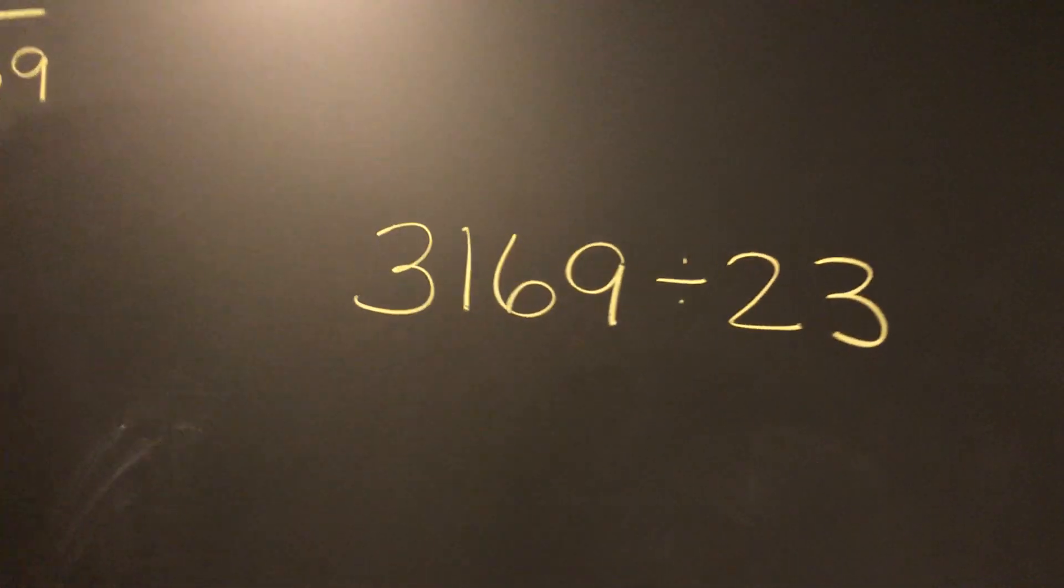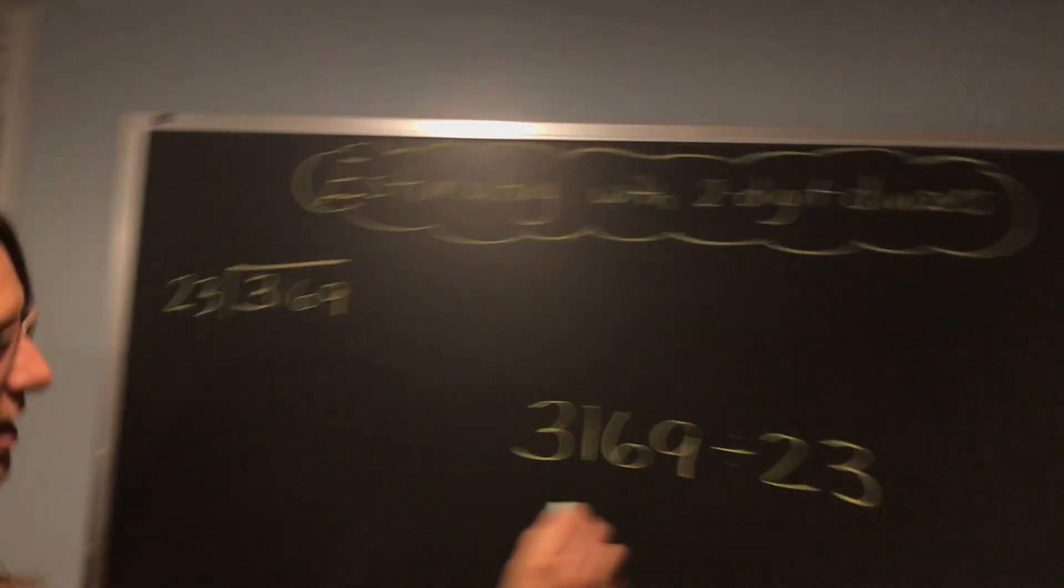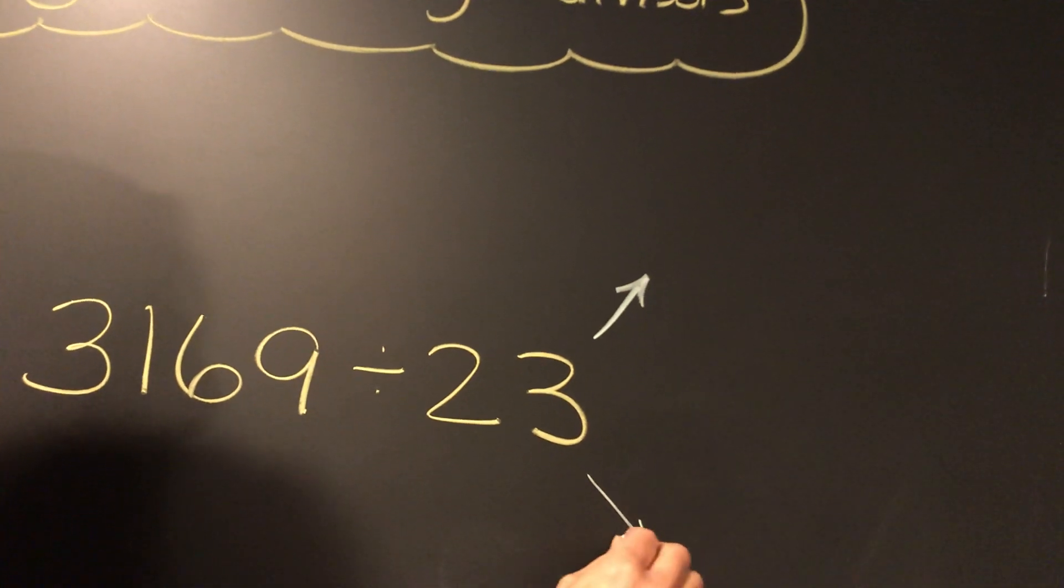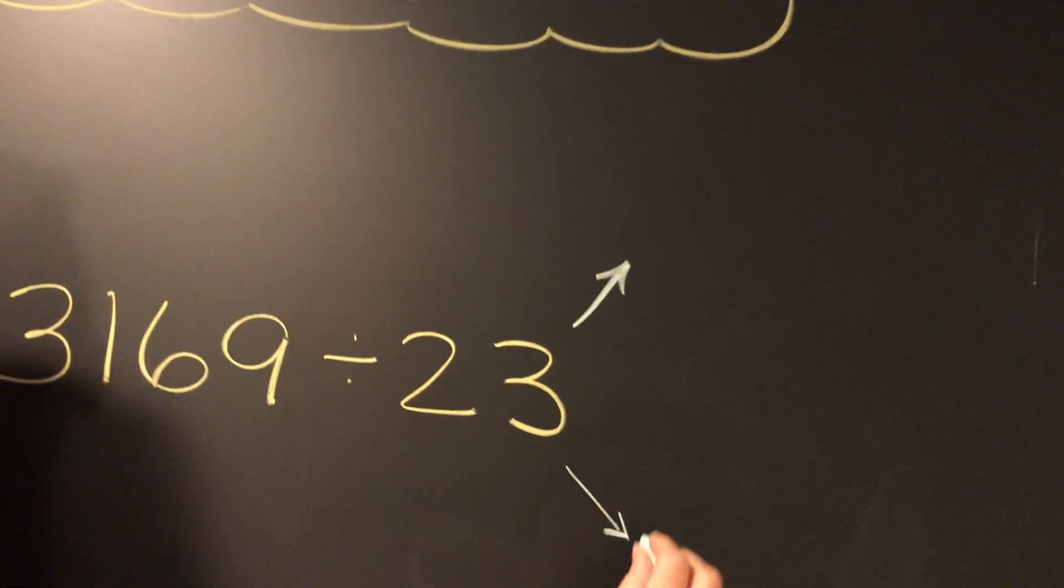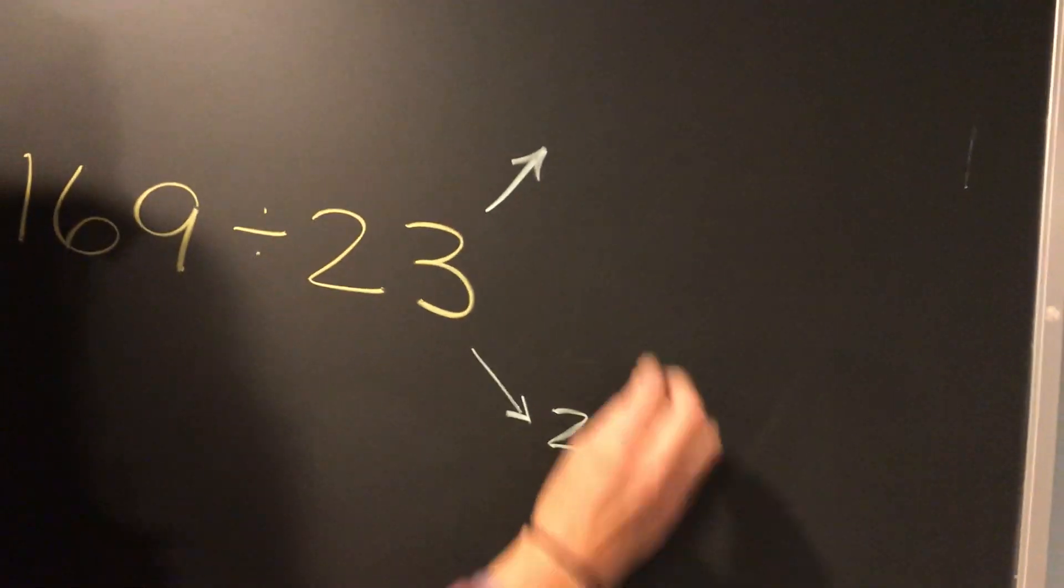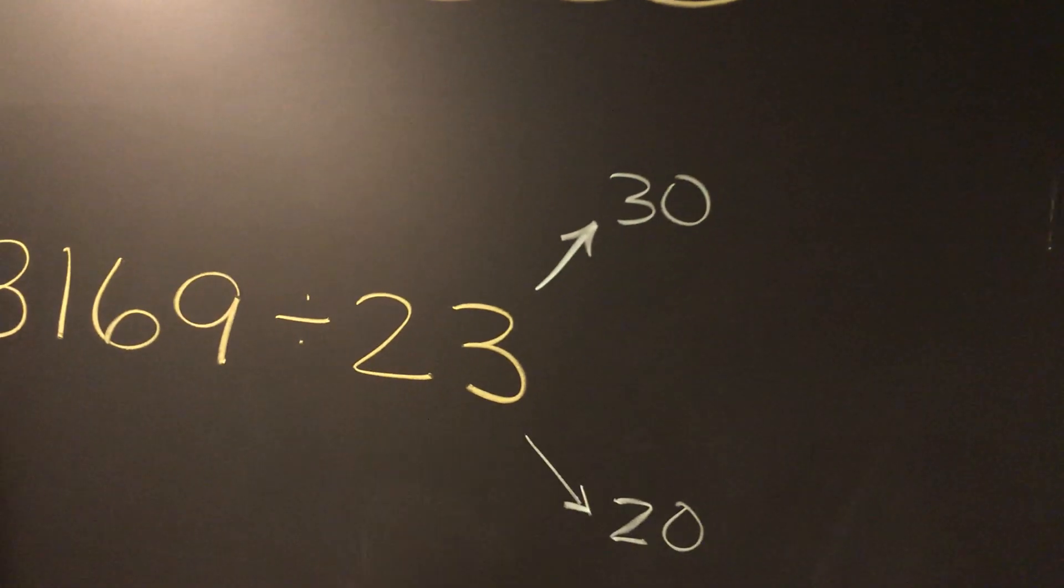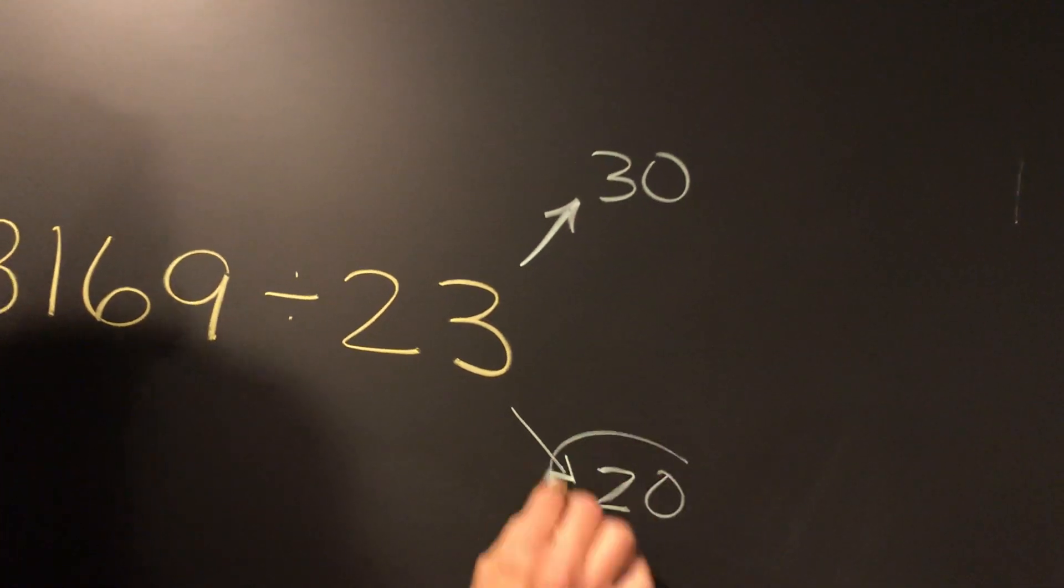The second step is to round the divisor to its highest place value. So 23 can either round down to 20 or up to 30. Since 20 is closer to 23 than 30 is, we're going to choose that.